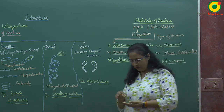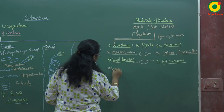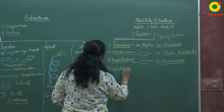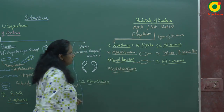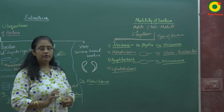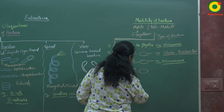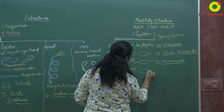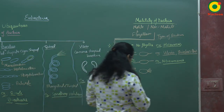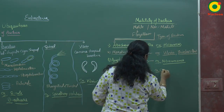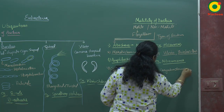The fourth type is cephalotrichous bacteria. In cephalotrichous bacteria, a bunch of flagella is present on only one side of the body. Example: Corynebacterium.